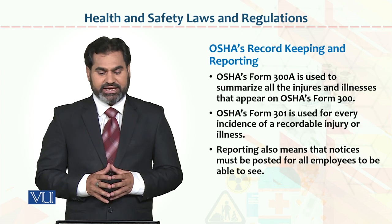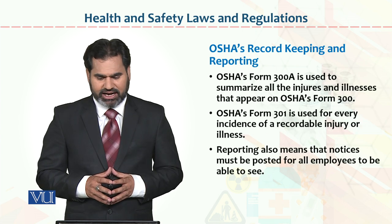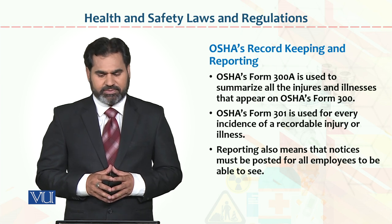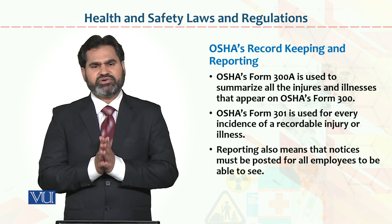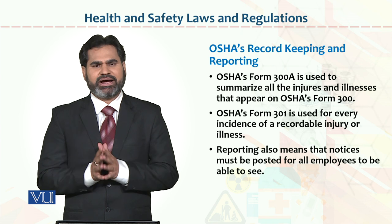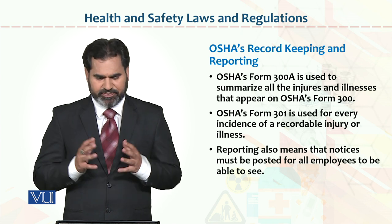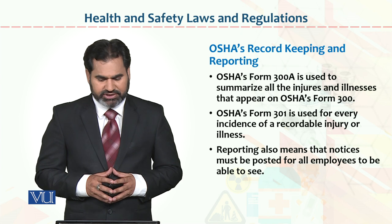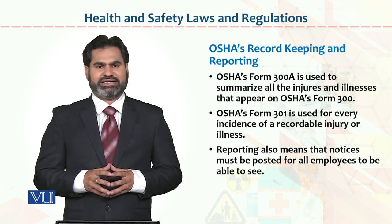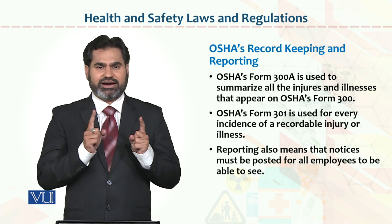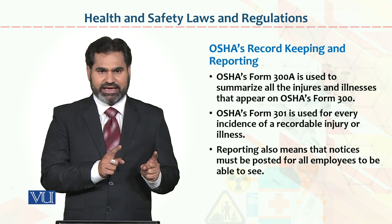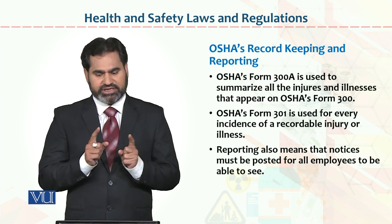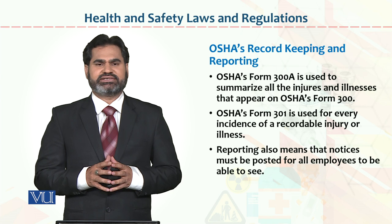Form 300A is used to summarize all the injuries and illnesses that appear in OSHA Form 300 — data from Form 300 is compiled and made part of Form 300A. Form 301 is used for every incident of a recordable injury or illness; injuries or diseases that need to be recorded are made part of Form 301.